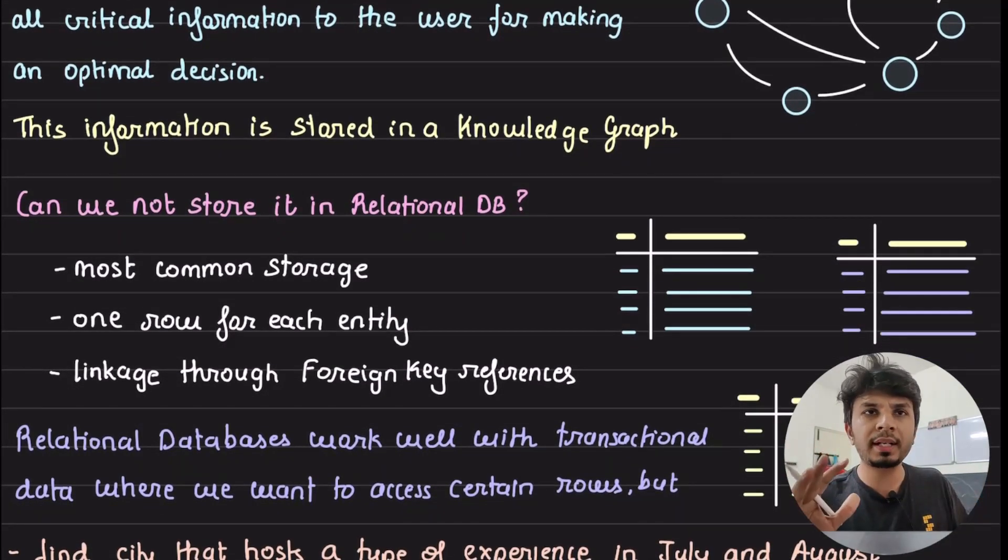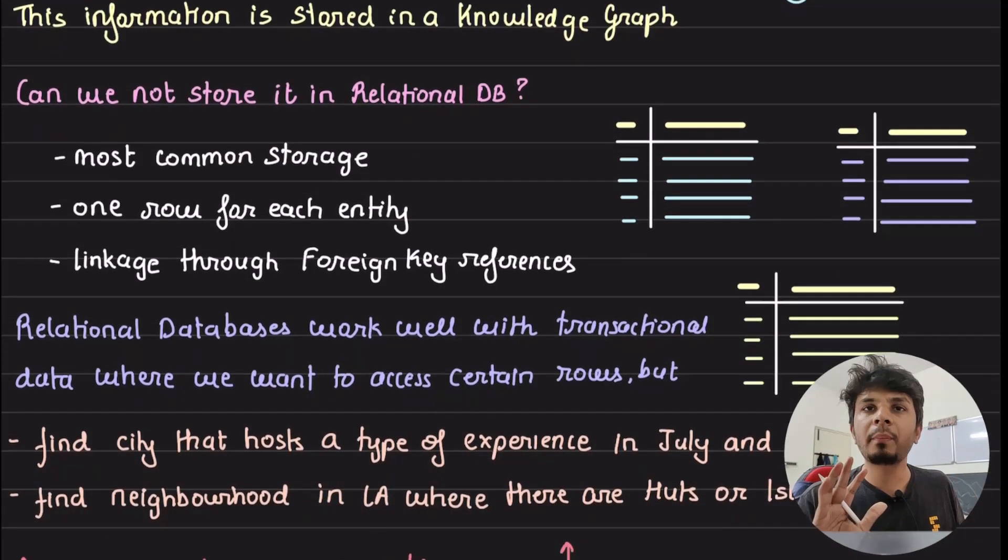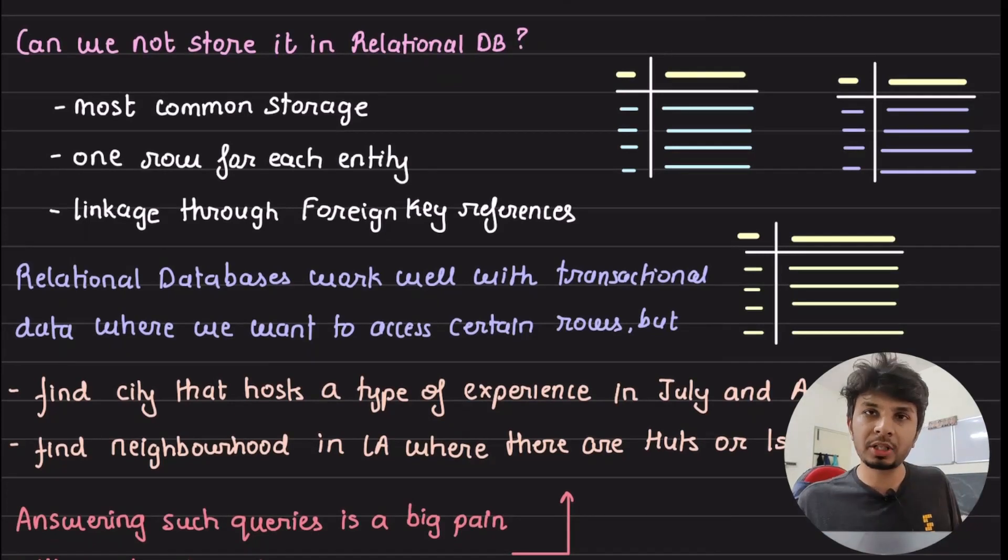Airbnb has a very traditional architecture. They have most of their data, like most of the transactional data, present in relational databases. But why can't they use that information to power this functionality? Because with relational databases, you typically know that it's the most common way to store stuff.